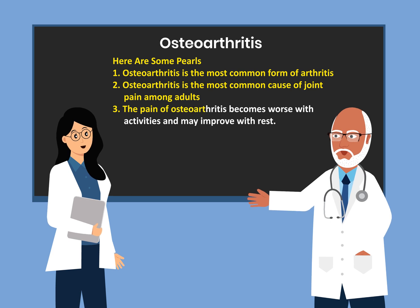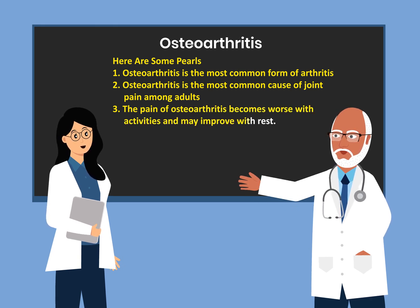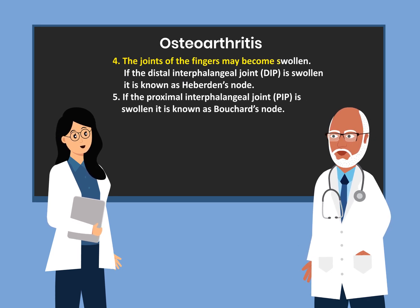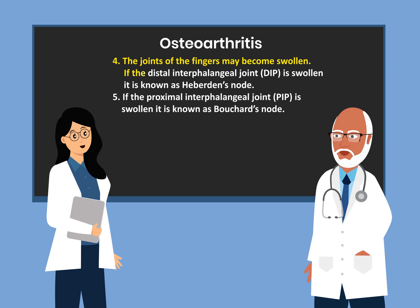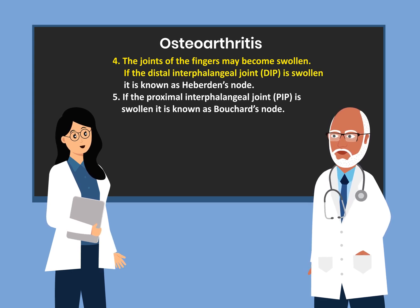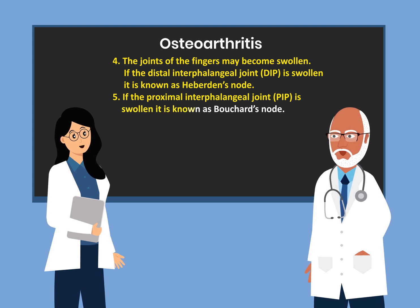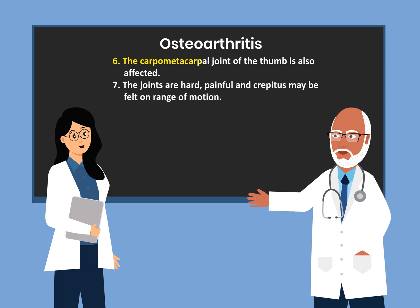The pain of osteoarthritis becomes worse with activities and may improve with rest. The joints of the fingers may become swollen. If the distal interphalangeal joint, which is the DIP, is swollen, it is known as Heberden's node. If the proximal interphalangeal joint, which is the PIP, is swollen, it is known as Bouchard's node. The carpometacarpal joint of the thumb is also affected.